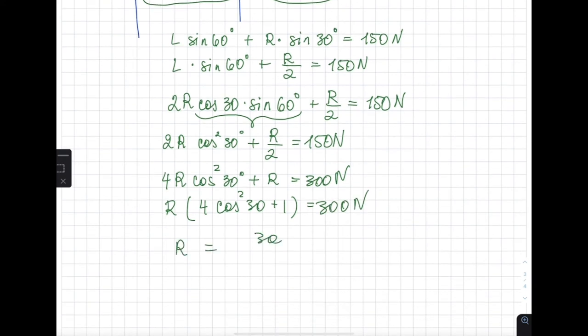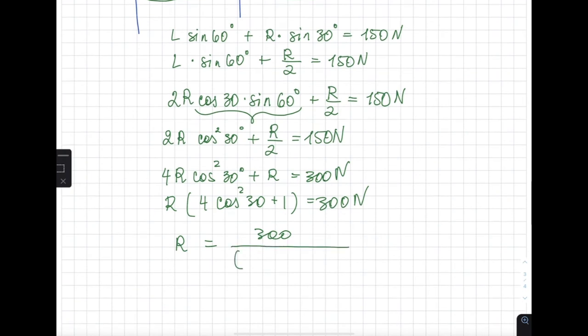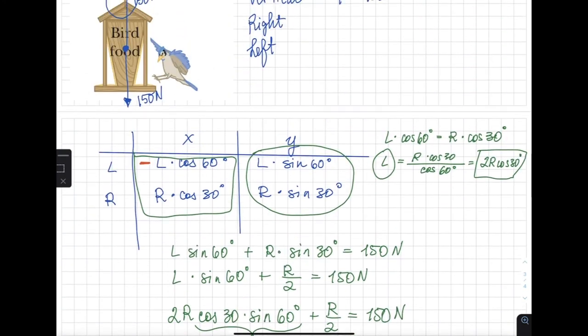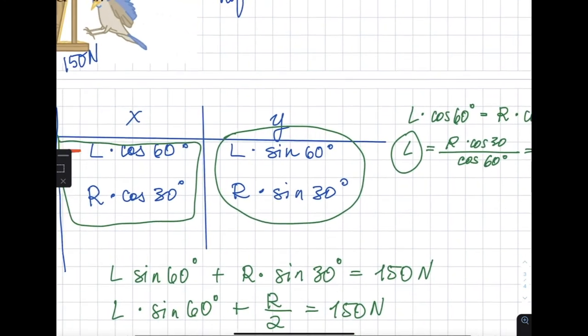And then you have R times 4 cosine squared of 30 plus 1 equals 300 newtons. Then so you have just R equals 300 over 4 cosine squared of 30 plus 1. So plug that into your calculator and figure it out. You could have stopped somewhere and calculate what cosine times sine equals and whatnot. Ultimately we only have in this equation when we have one variable which is R, that's the force in the right cable or in the right rope.